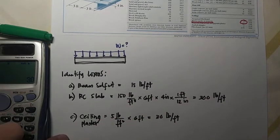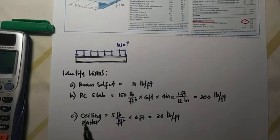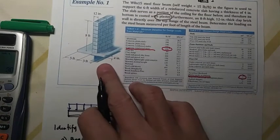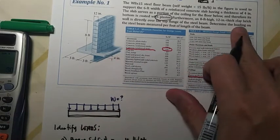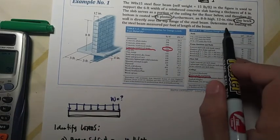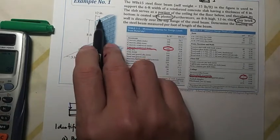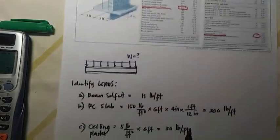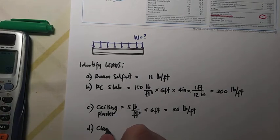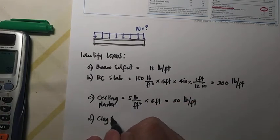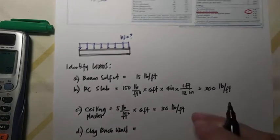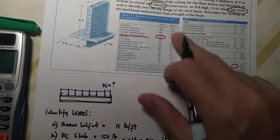So that comes from the ceiling plaster. What else? Letter D. Another is the clay brick, so we have the clay brick wall which is 8 feet high and 12 inches width. So we have the clay brick or brick wall.